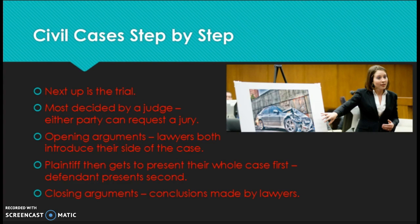If we get past that, we actually go to trial. It's up to the participants whether they want a judge to look over the case or if they want a jury — either the plaintiff or the defendant can request a jury for a civil case. The trial starts with opening arguments, where both lawyers introduce their side of the case. The plaintiff always goes first, then the defendant presents. During this time, both lawyers can do what's called a cross-examination, questioning and trying to challenge the other side's case. Lastly, we have closing arguments — the conclusions made by the lawyers before the jury or judge decides.